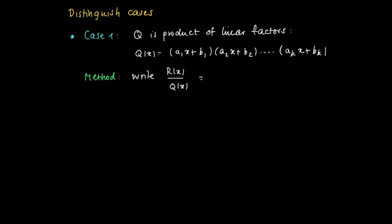So our general approach here will be that we try to write R(x) divided by Q(x). We assume that we already went through step 1, and that we may express this fraction as A₁ divided by the first linear term, etc., as a sum plus Aₖ divided by aₖx + bₖ. So for example...